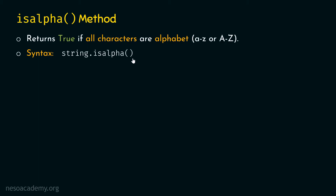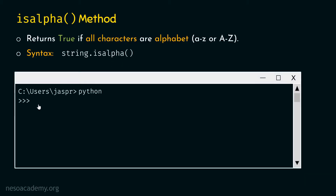Let's open the command prompt and activate the Python interactive shell to see how the isalpha function works. Let's type the command: 'hello2'.isalpha() — with no arguments inside the parentheses. If we hit enter, we will get false as a result because the '2' is not an alphabet. All other letters are alphabet, but '2' is not, hence isalpha returns false.